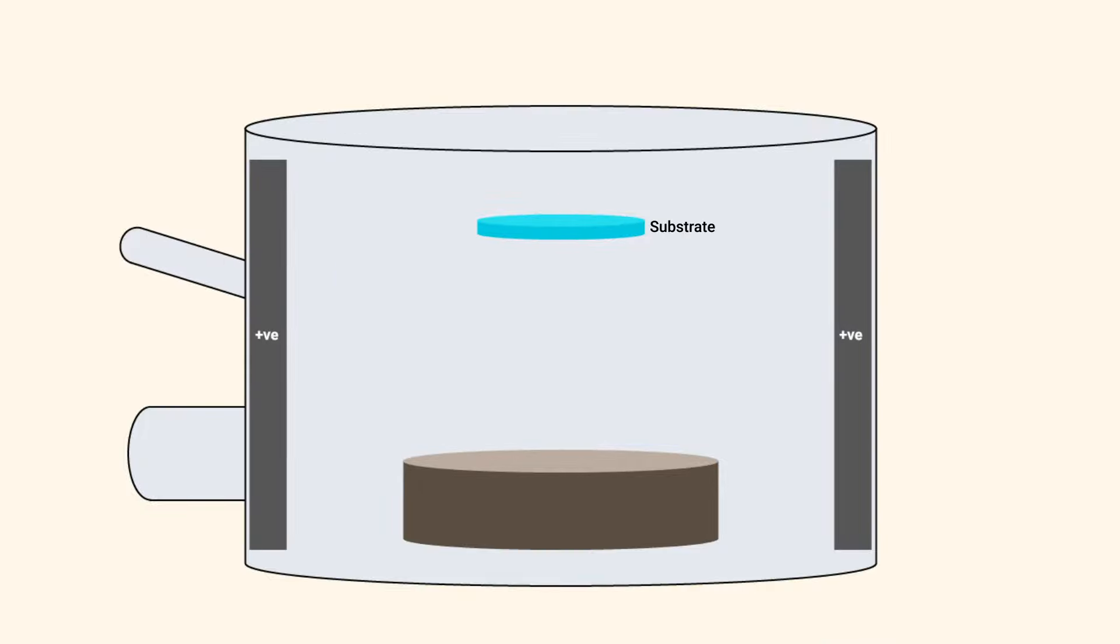The sputtering process starts with placing the substrate in a vacuum chamber filled with inert gas atoms, such as argon. A voltage is applied between the chamber and the coating material, so that the coating material receives a negative charge and becomes a cathode.